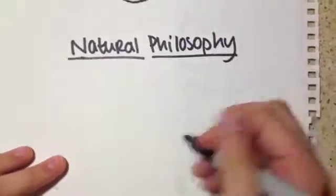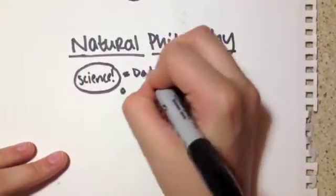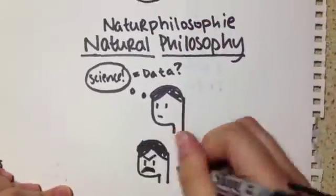Around Helmholtz's time, there was this idea called natural philosophy. The whole concept was that science could be based off of philosophical concepts rather than hard data. Helmholtz spent the rest of his life trying to refute this idea.